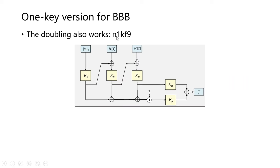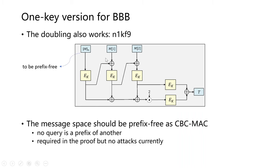For the one-key version, here is n1kf9. We also add a single doubling at the end. But there is an additional constraint that the message space should be prefix-free, as in the original CBC-MAC. That is, no message is a prefix of another. This is required in the proof but not attacked currently.